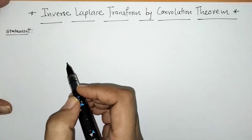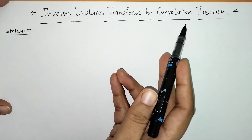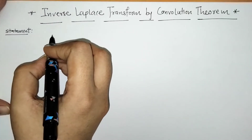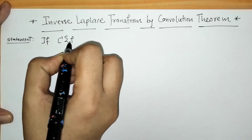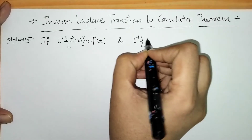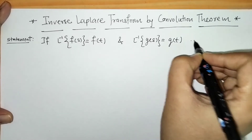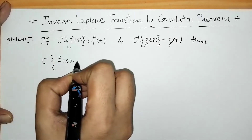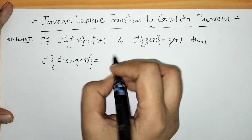Hello everyone, welcome to Unlock Maths. Today we have to find the inverse Laplace transform by using the convolution theorem. So first, here we have to write down the statement of this convolution theorem. If we have L⁻¹{F(s)} = f(t) and L⁻¹{G(s)} = g(t), then we can find L⁻¹{F(s)·G(s)} by using this formula.